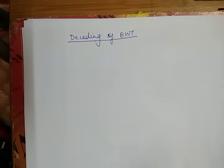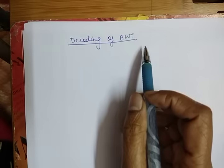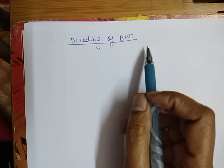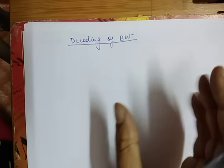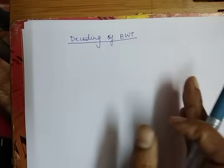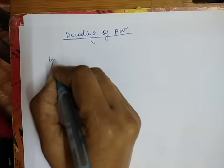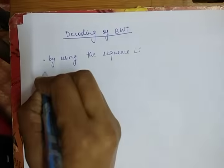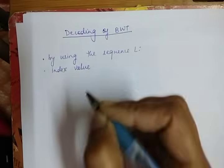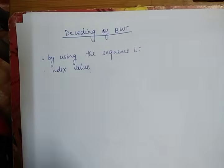Hello friends, this video explains the decoding part of the Burrows-Wheeler Transform technique, which is one of the lossless techniques. In our previous video I did an encoding part of BWT, and by using the output of that encoding part, I will decode the same sequence taken in the last video. For decoding BWT, we have to decode the original sequence by using the sequence L, which shows the last symbol, and by taking the index value of the original sequence.